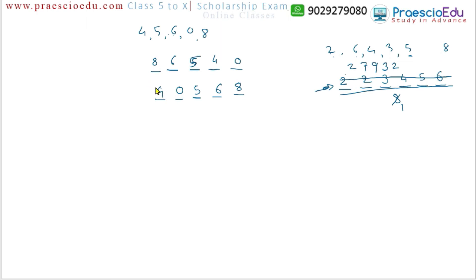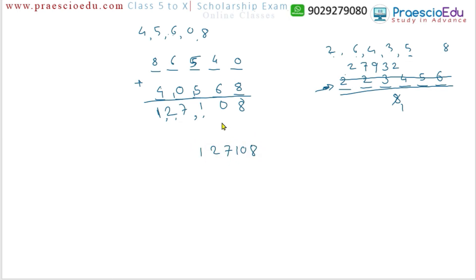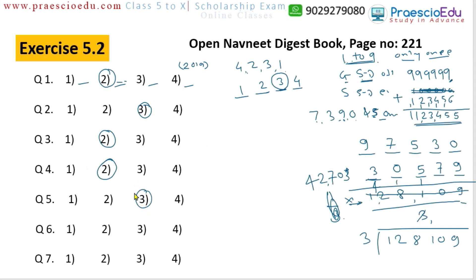Now we add 86,540 and 40,568: 0 plus 8 is 8; 4 plus 6 is 10, carry 1; 10 plus 1 is 11, carry 1; carry gives 7; and finally 12. So the sum is 1,27,108. But we have to find the half, so we divide by 2: 2 sixes are 12; 2 threes are 6, carry 1; 2 fives are 10, after 11 balance 1; so 2 fives are 10; and 2 fours are 8. This gives 63,554, which is maintained at option number 3.